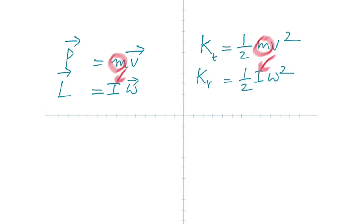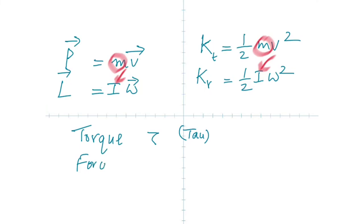Whatever part force plays in linear motion, there is a new quantity called torque that comes in for rotation. Torque is represented by the Greek symbol tau. It's a vector, just like force.